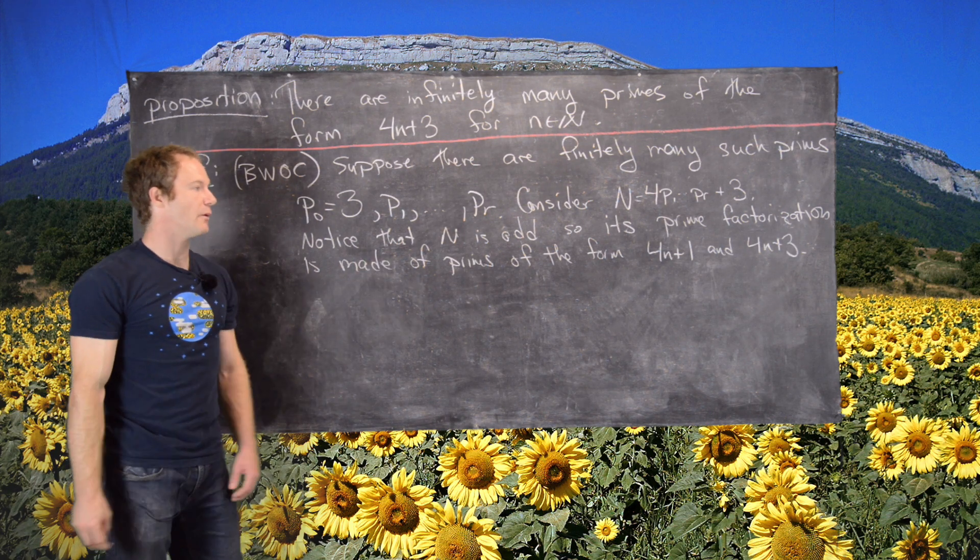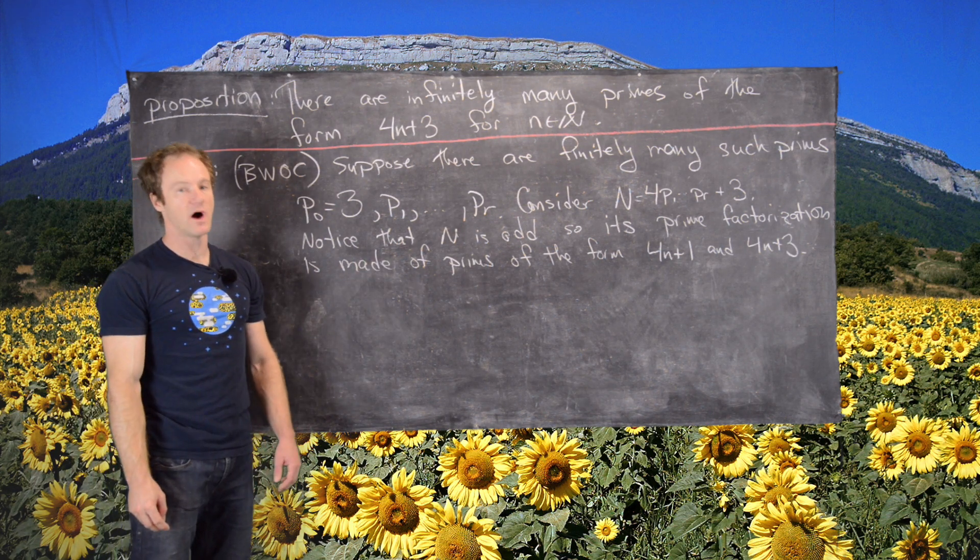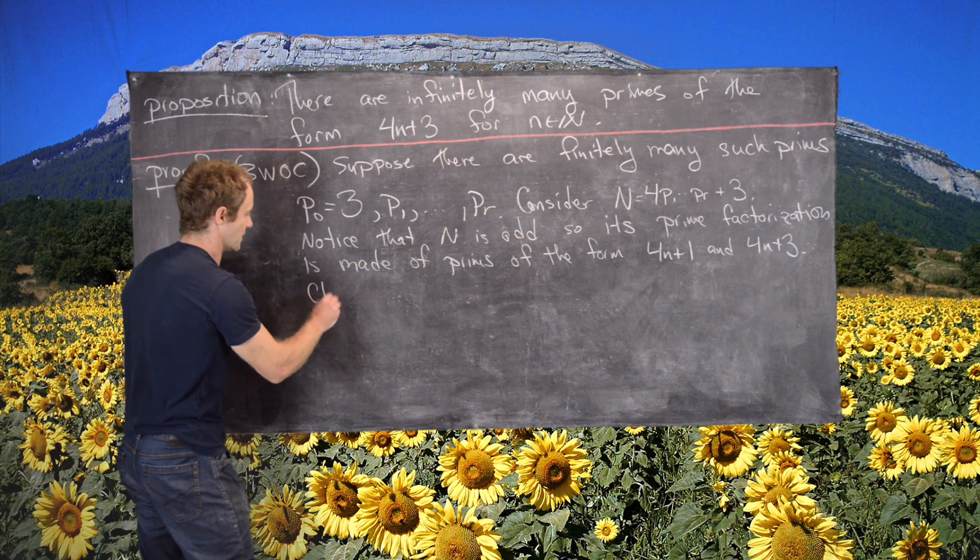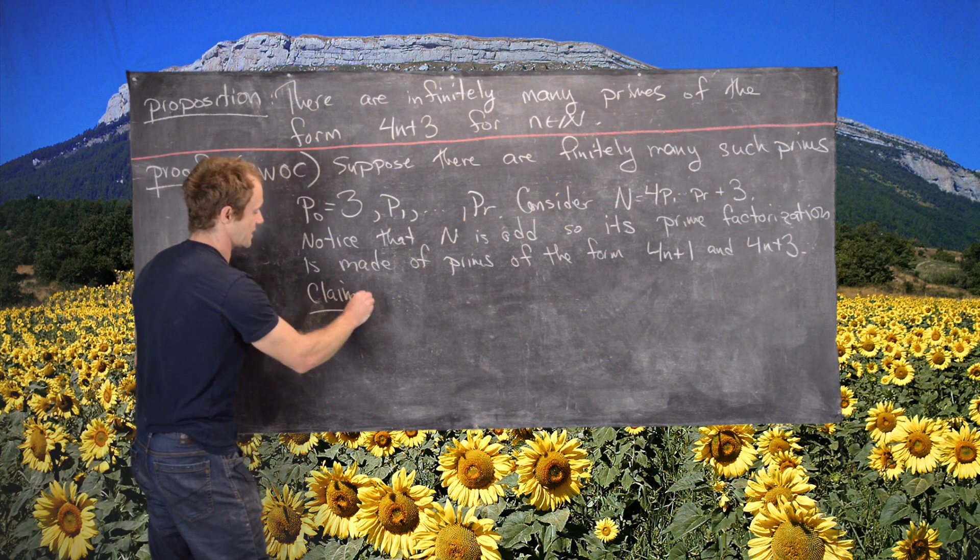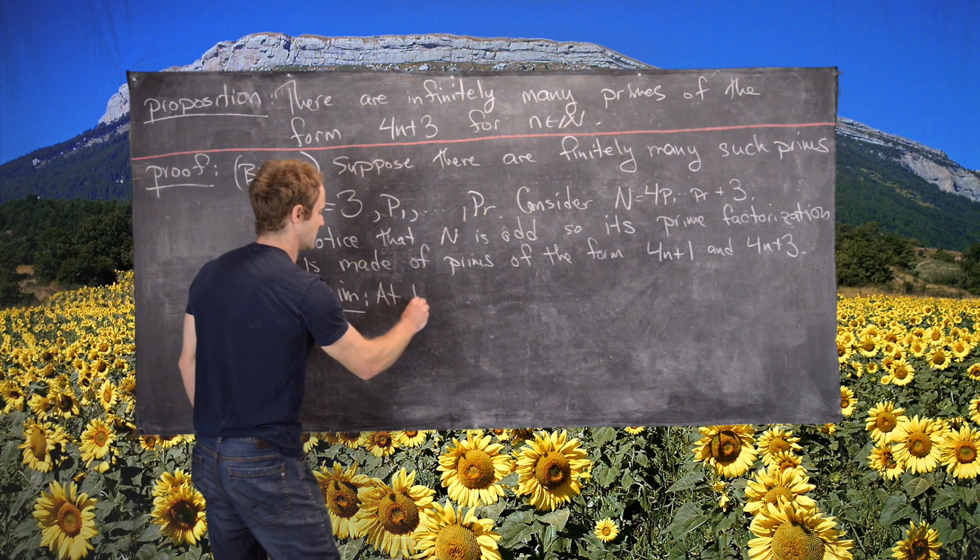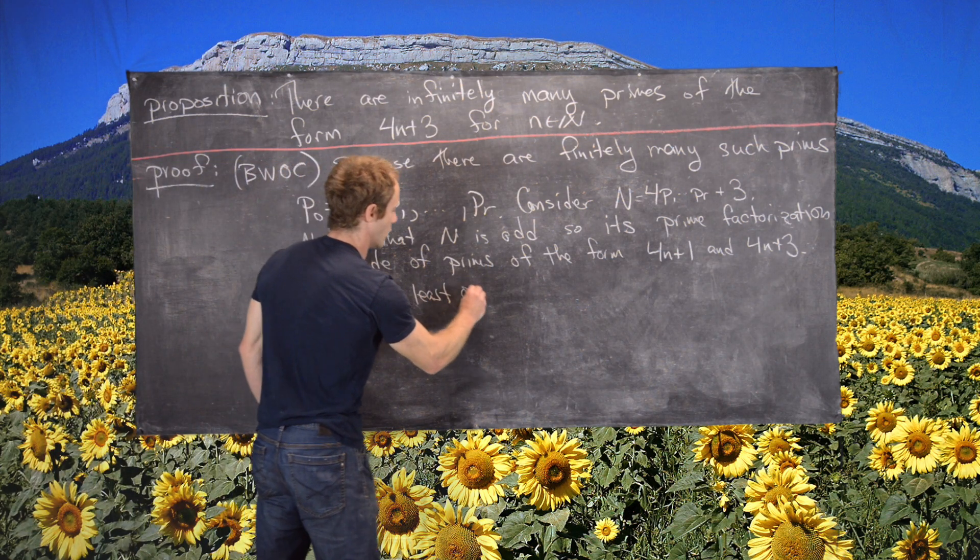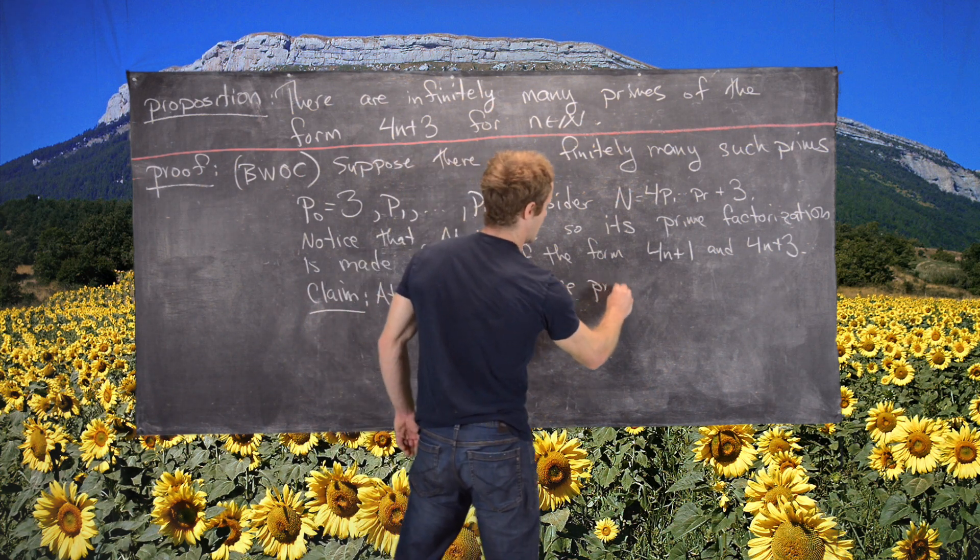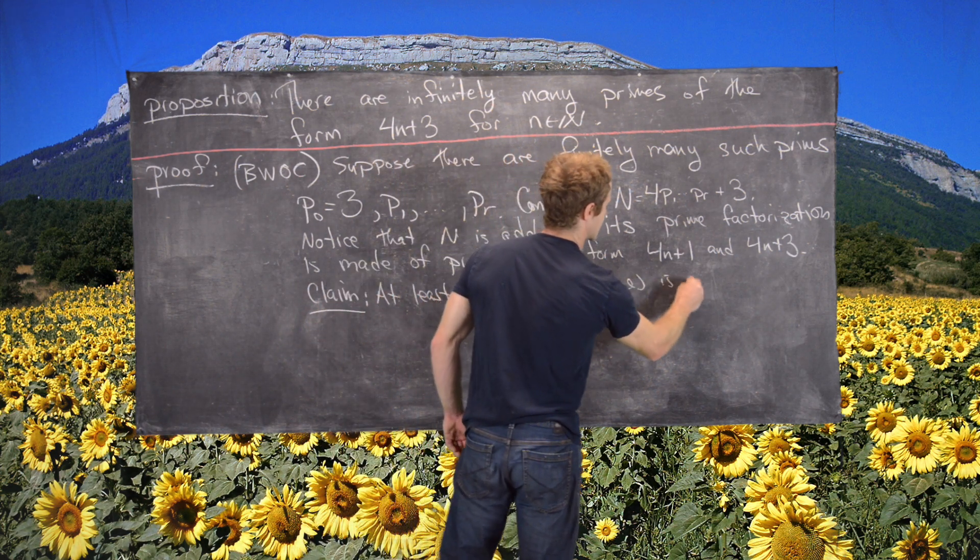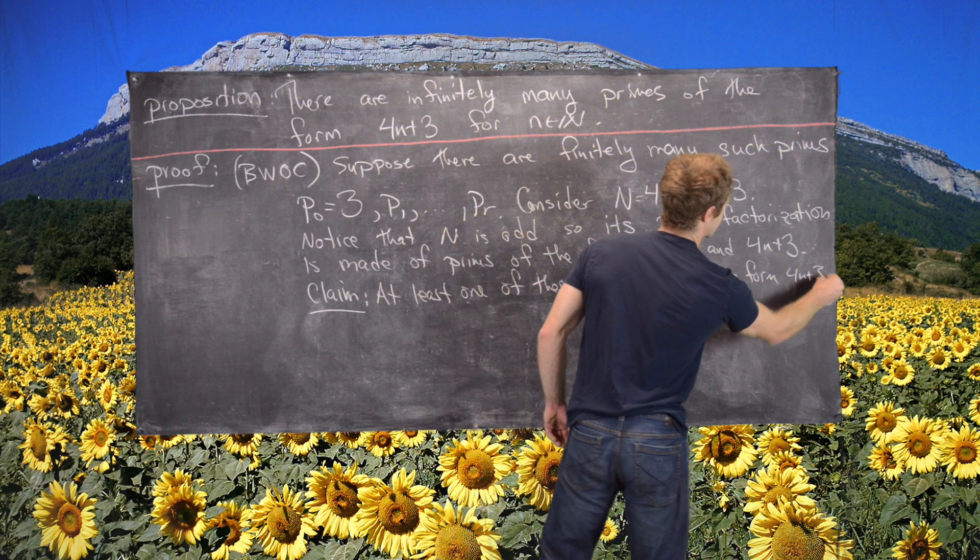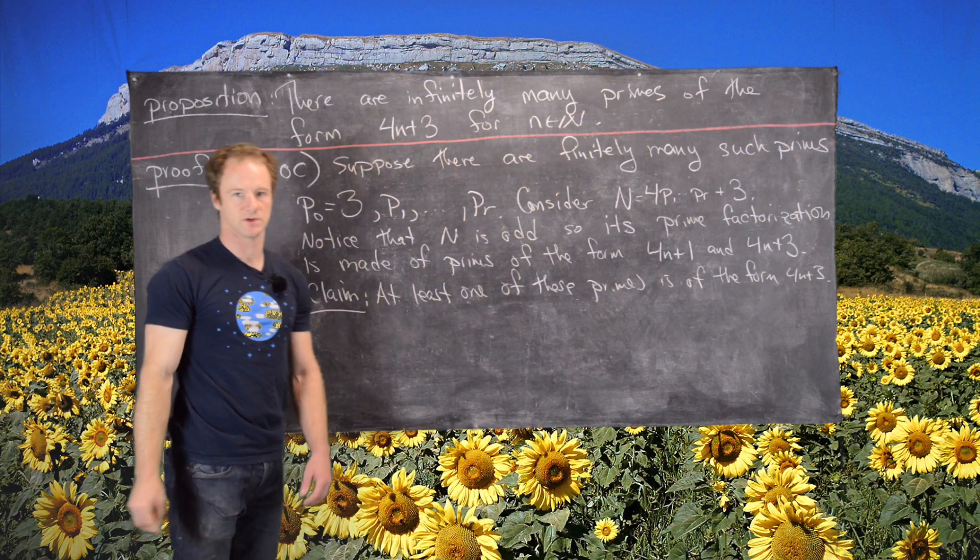So now what we want to claim is at least one of those primes is of the form 4n plus 3. So let's write that as kind of a subclaim within the proof. At least one of these primes is of the form 4n plus 3.